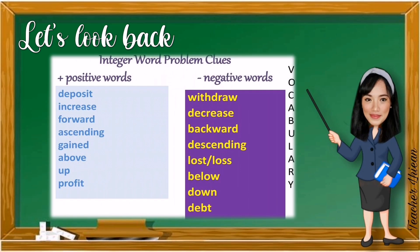Now, let us look at the clue words to remember when dealing with integers in word problems. Positive words include: deposit, increase, forward, ascending, gain, above, up, and profit. Negative words include: withdraw, decrease, backward, descending, lost/loss, below, down, and depth. Remember these words so that when you encounter word problems or phrases involving integers, you can easily identify whether the integer is positive or negative.